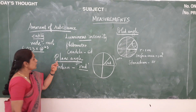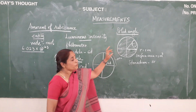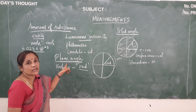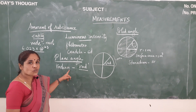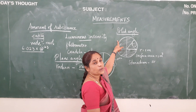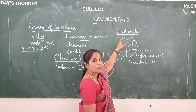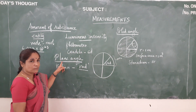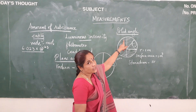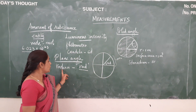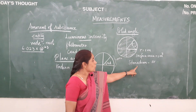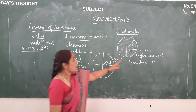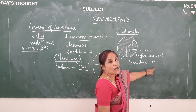Next let us see the difference between the plane angle and the solid angle. Plane angle is formed by the intersection of two straight lines or two planes, and solid angle is formed by the intersection of three or more planes at a common point. Plane angle is two dimensional and solid angle is three dimensional. The SI unit of plane angle is radian and the SI unit of solid angle is steradian, denoted by rad and sr respectively.